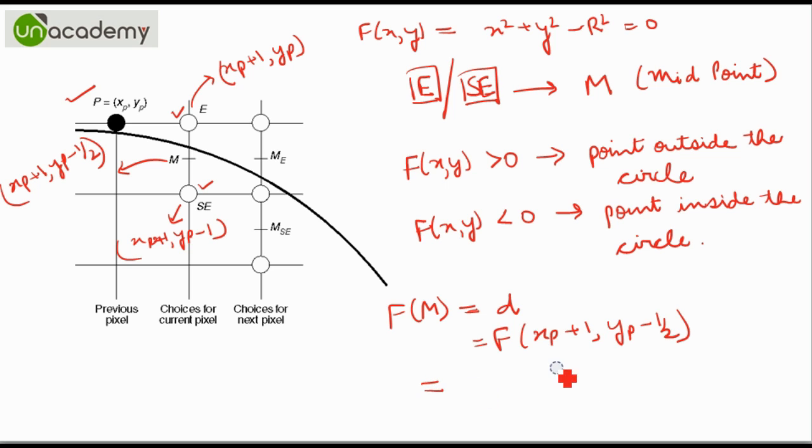So on putting the values of X and Y into the equation we get (XP+1) whole square plus (YP-1/2) whole square minus R square.